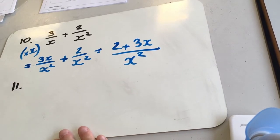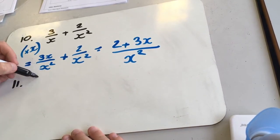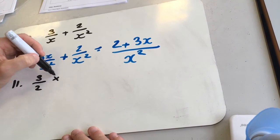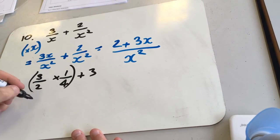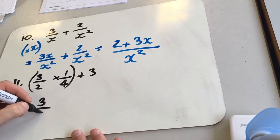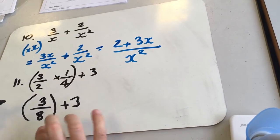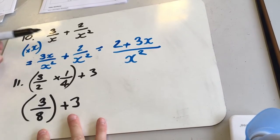All right, question 11. So we've got 3 over 2 times 1 over 4. We'll worry about the plus 3 in a minute. So times these together, 3 over 8 plus 3. Again, we need a common denominator, similar to what we did up here.